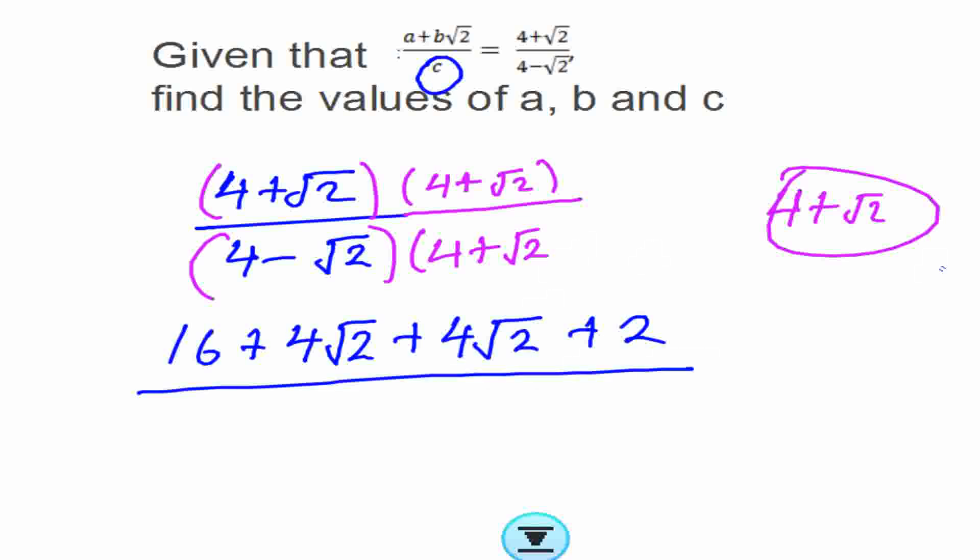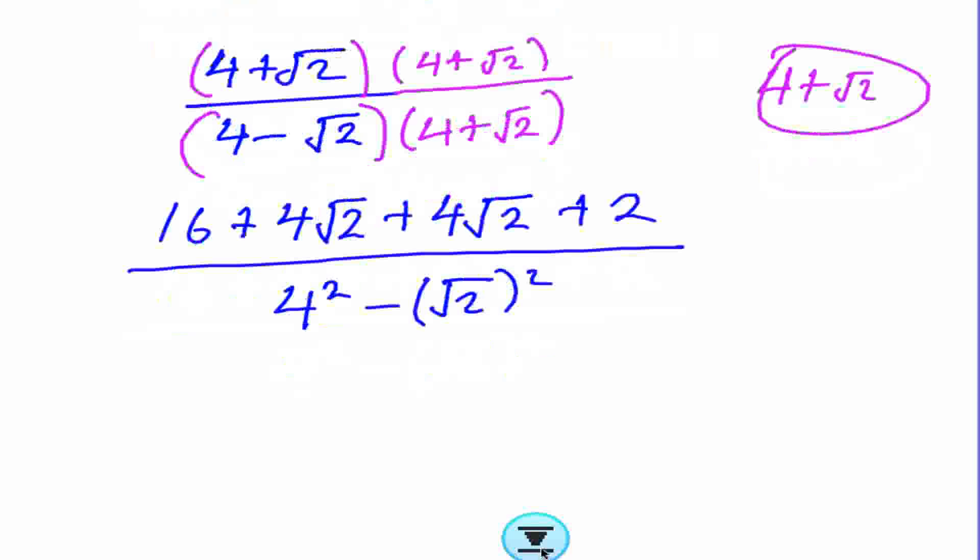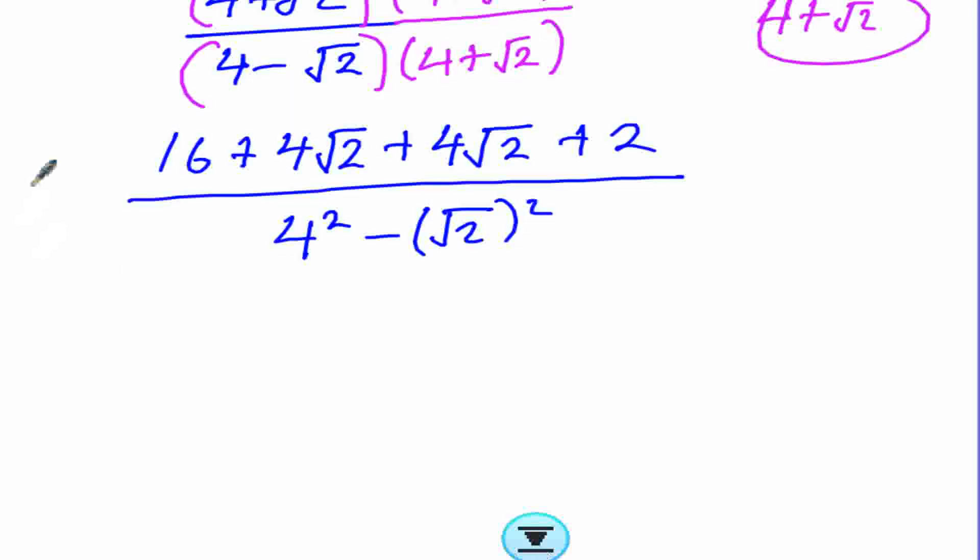Now the denominator is a difference of two squares, so we don't have to expand it. We just write the difference of two squares which is 4 squared minus root 2 squared. Then we can simplify now: 16 plus 2.